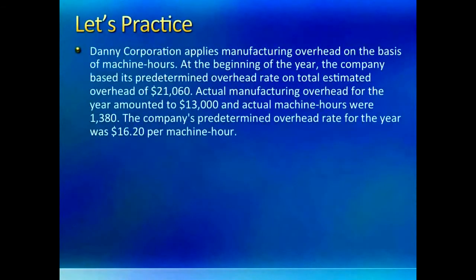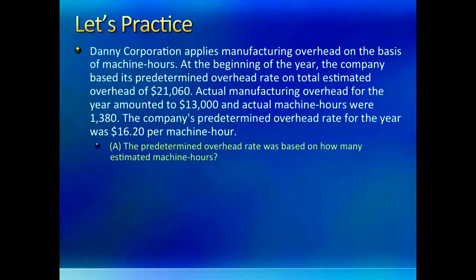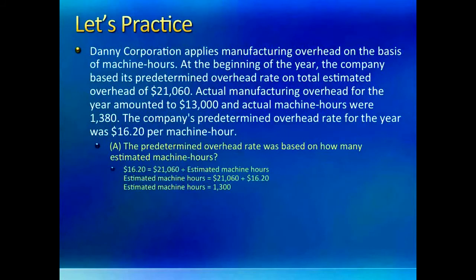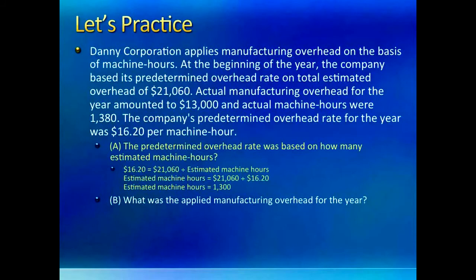Let us see one more to be doubly confident on this material. In part A you have to figure out the denominator used in calculating the budgeted manufacturing overhead rate. As a first step, write down the definition of budgeted manufacturing overhead rate, plug in the rate, and solve for machine hours. In the next step, we have to apply the manufacturing overhead given the rate and actual machine hours — so we take the rate from the question and apply it to the actual machine hours given to us.